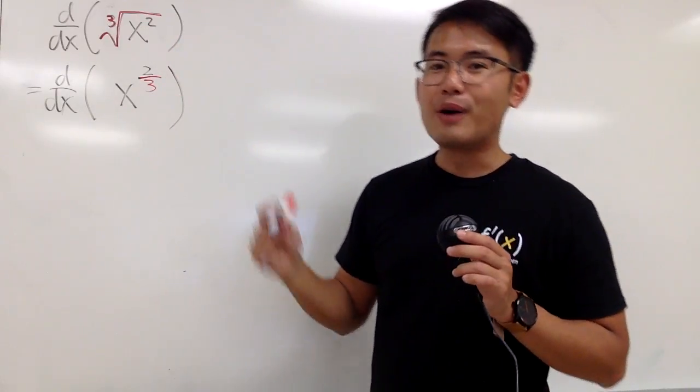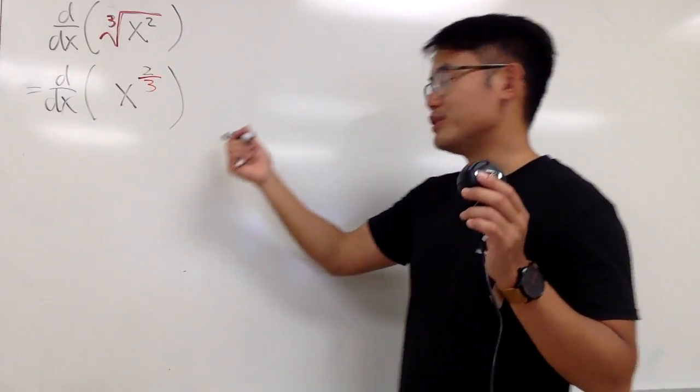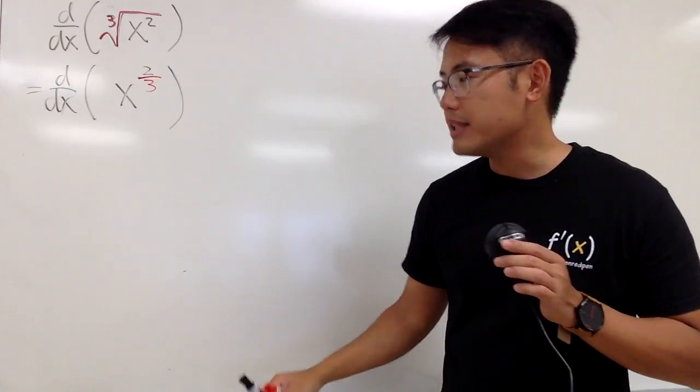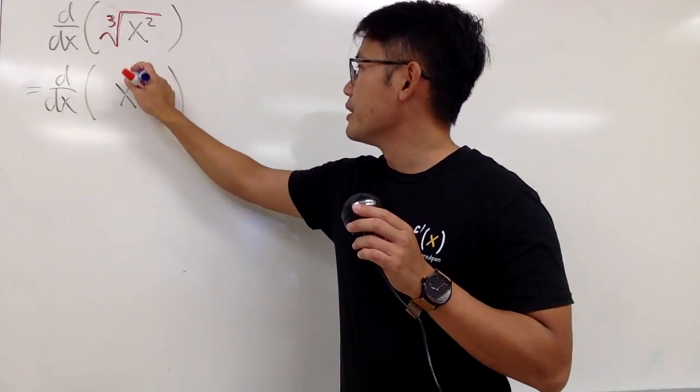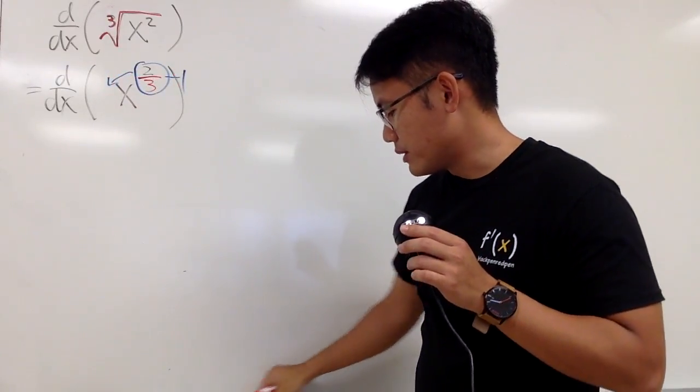And then from here, how can we differentiate this? We can just use everybody's favorite method, right? Namely, the power rule. I will bring the power to the front, and then minus 1 to the exponent.